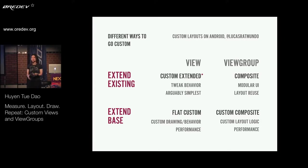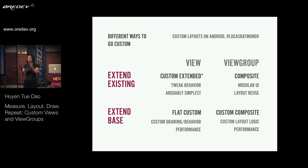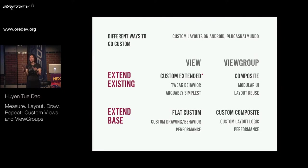That was actually my gateway drug into custom views. I was at a job a while ago and we had a lot of forms, and we were supporting down to Gingerbread. We had tons and tons of forms and a lot of input types that we wanted to use to do verification on our forms. But some of them weren't quite compatible with Gingerbread. And rather than copy and pasting the same Java code over and over again in activities, I basically extended TextView, backported those attributes, and then I could use that in place of all that extra copy and pasting. So that's kind of the primary elementary version of custom views.